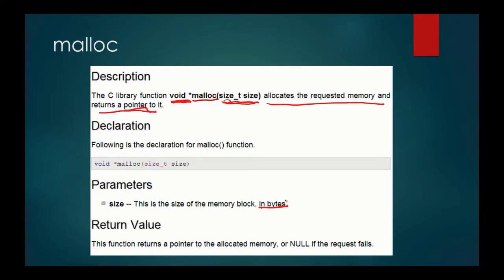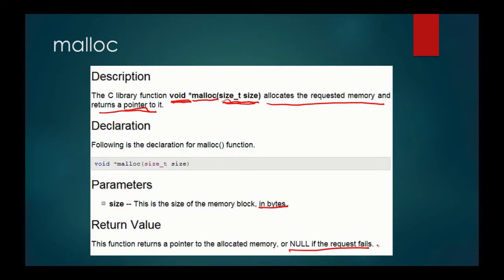Another thing you need to be aware of is that the function returns a pointer to the allocated memory. The value of a pointer is a memory address. So if we have a successful call to malloc and we get the memory allocated, we'll have a memory address to that memory that was just allocated for us. If it fails for some reason, it's going to return a null value. I'll go through that in the code to show how we'd check to make sure that if the malloc call failed, we cannot proceed.